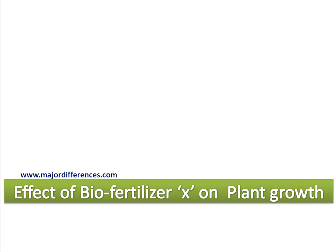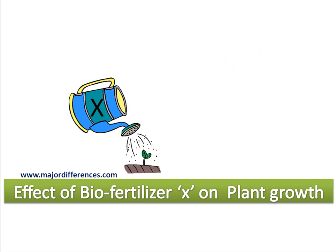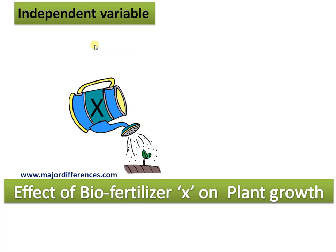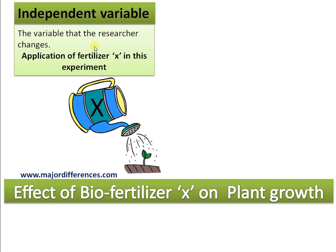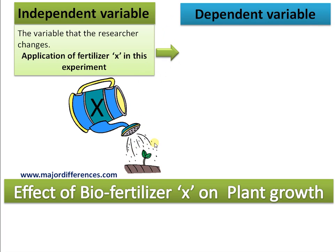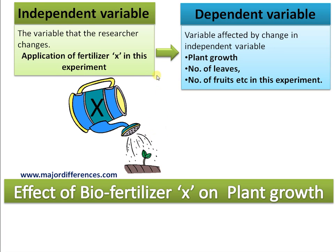Let's take that example to explain the concept: effect of biofertilizer X on plant growth. A researcher has developed a formulation of biofertilizer and is testing its effect on plant growth. Therefore, the independent variable — the variable that the researcher changes — is the application of biofertilizer X.